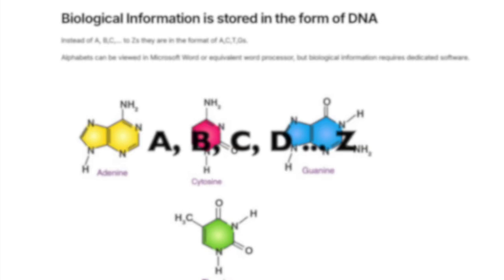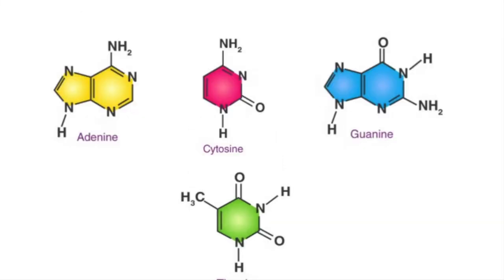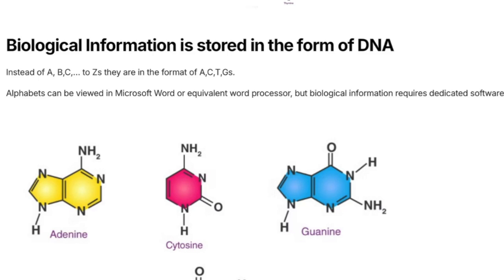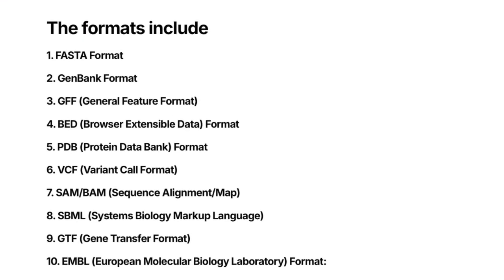Instead of the A through Z alphabets we use in a word processor, biological information is stored in adenine, cytosine, thymines, and guanines. Alphabets can be viewed in Microsoft Word or equivalent word processors, but biological information requires dedicated software. It's often stored in formats like FASTA, GenBank, GFF, BED, PDB (protein data bank), VCF (variant call format), SAM and BAM (sequence alignment formats), EMBL (European Molecular Biology Laboratory format), GTF, and plenty more.